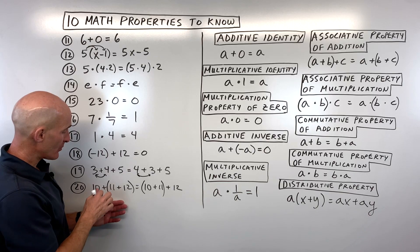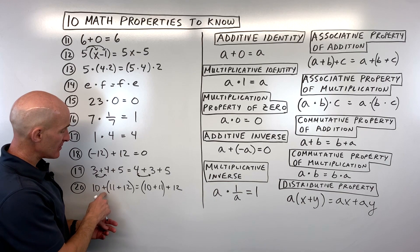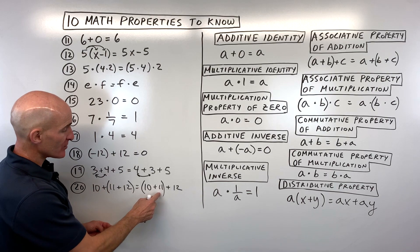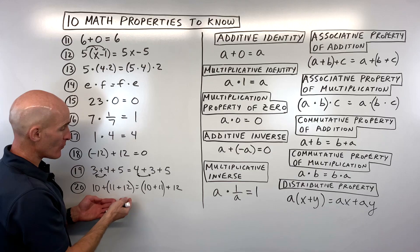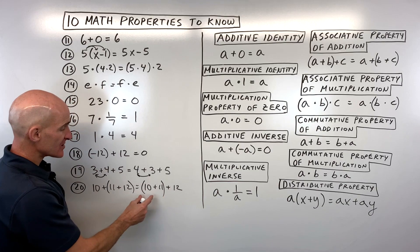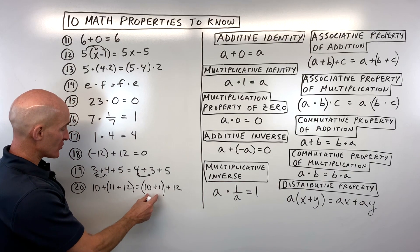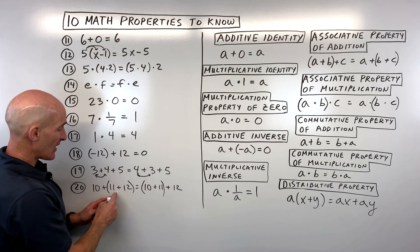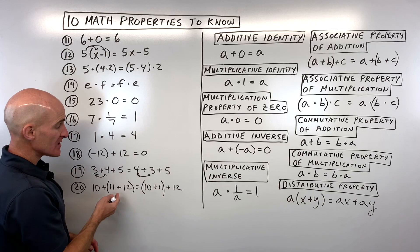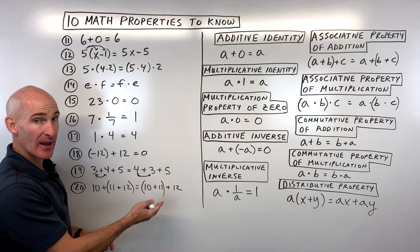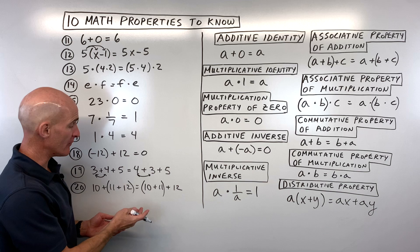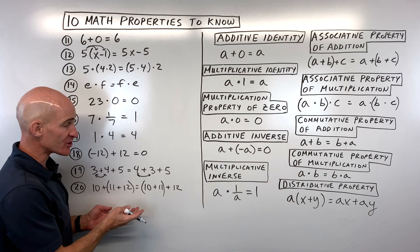For number 20: 10 + (11 + 12) = (10 + 11) + 12. Notice they're in the same order but the grouping is different — parentheses around the last two numbers here, the first two there. You still get the same answer, but this is the associative property of addition.